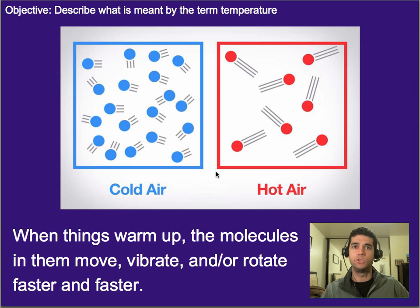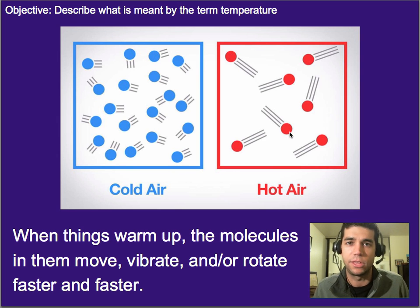what's actually happening if we zoom in on them is the cooler object is made up of molecules that are not moving quite as much, whereas a warmer object would be made up of molecules that are either moving or rotating or vibrating significantly faster than something that is cooler.